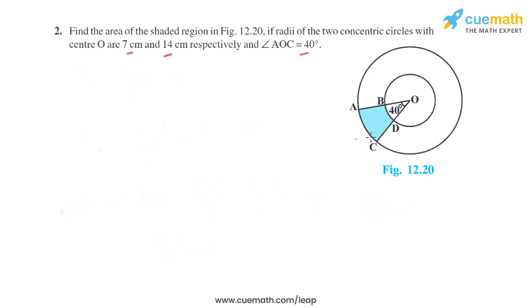To find the area of the shaded region, we can find the area of the bigger sector, find the area of the smaller sector, and subtract them to get the area of the shaded region.